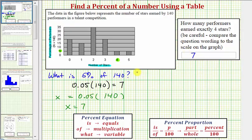Now using the percent proportion, we can use key words: is over of equals p over 100. But this is really setting up two ratios where we compare the part to the whole and the percent to 100.